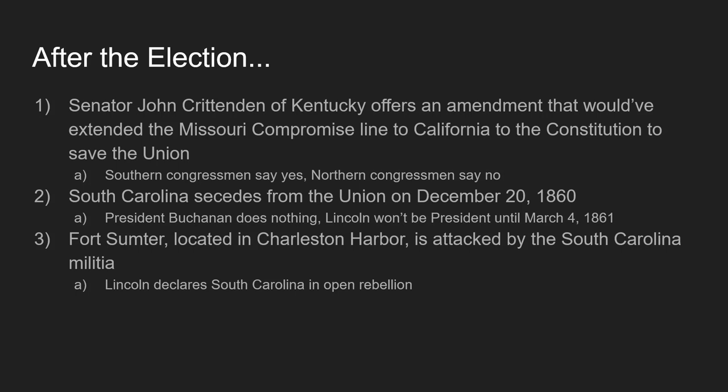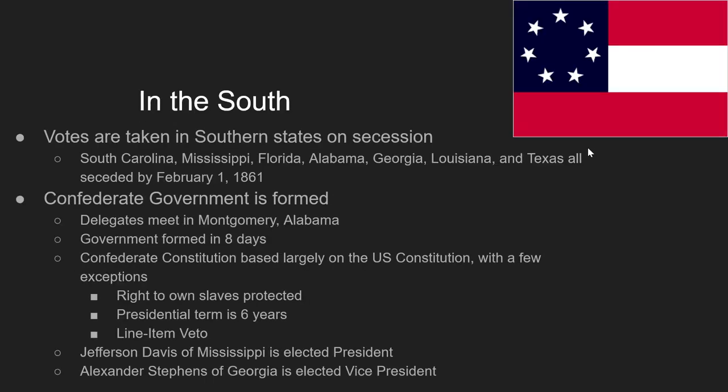After the election, Senator John Crittenden of Kentucky proposes reinstating the Missouri Compromise line — Southern representatives were okay with that, but Northern congressmen say absolutely not, calling it their chance to end slavery. South Carolina secedes from the Union on December 20th, 1860, and by February 1st, 1861, several other states have also seceded. Lincoln doesn't become president until March 4th, so all of this happens before he takes office. The Confederate government is formed — essentially a copy of the U.S. Constitution, but with slavery constitutionally protected, a six-year presidential term, and a line-item veto.